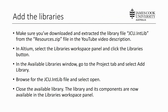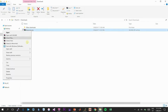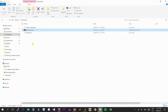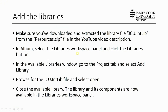Once you have an empty schematic, the next step is to add all component libraries you'll use throughout the project. For this project, only one library is required — you can find it in the resources archive file downloadable from the YouTube video description. Make sure you've downloaded and extracted the library file jcu.intlib from the resources archive. Simply right-click the resources file and select extract to local resources.